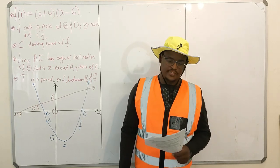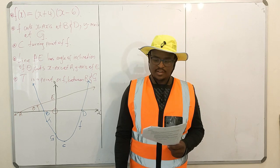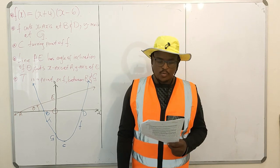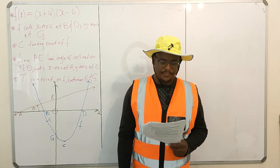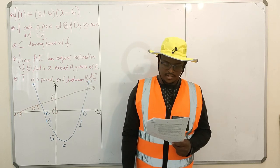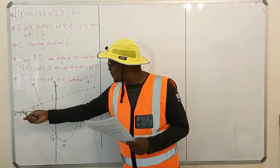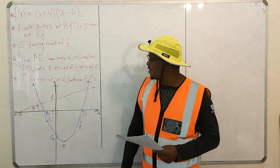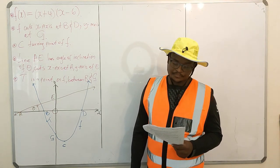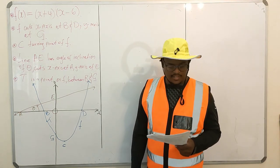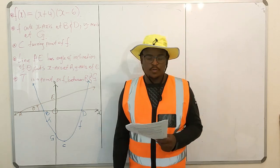Hello, thank you for watching this video. In this video we will be doing question 7 of November 2021, question 1 of mathematics paper 1. This is a functions question — we have a parabola and some straight line. I'm going to read the statement and then answer the questions that follow.